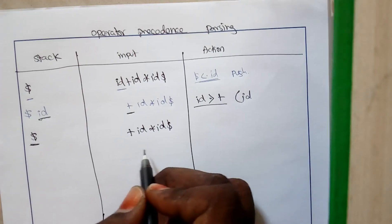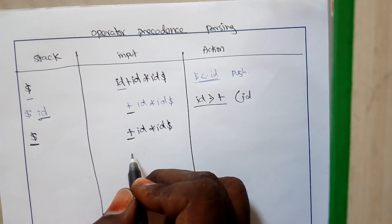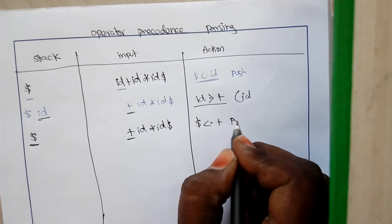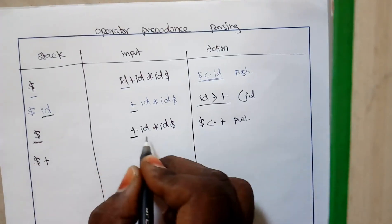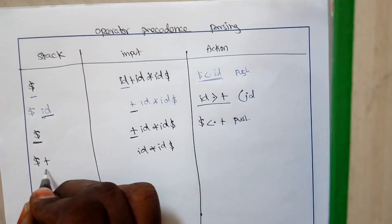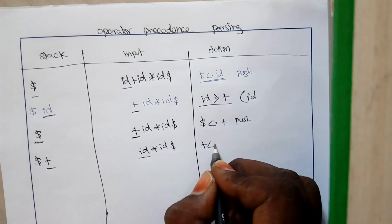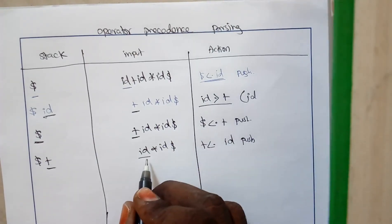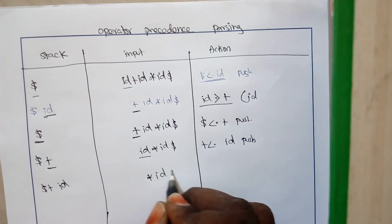The topmost element of the stack is dollar and the input is plus. Dollar has a lesser precedence over plus, so we push plus into the stack. The remaining input is id star id dollar. Again, when you compare plus and id, plus has a lesser precedence than id, so we push id into the stack. Now the stack is dollar plus id and the remaining input is star id dollar.